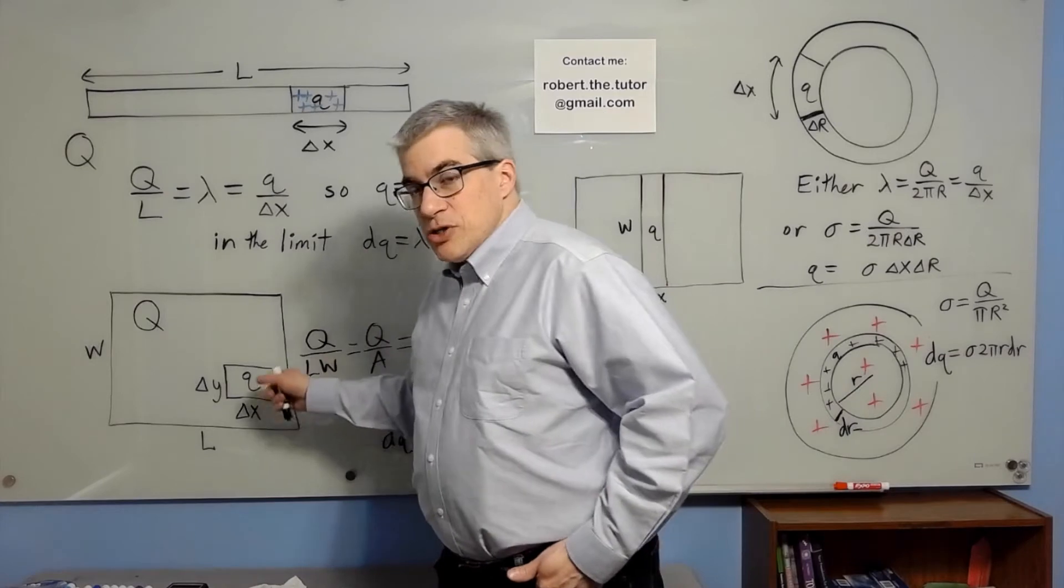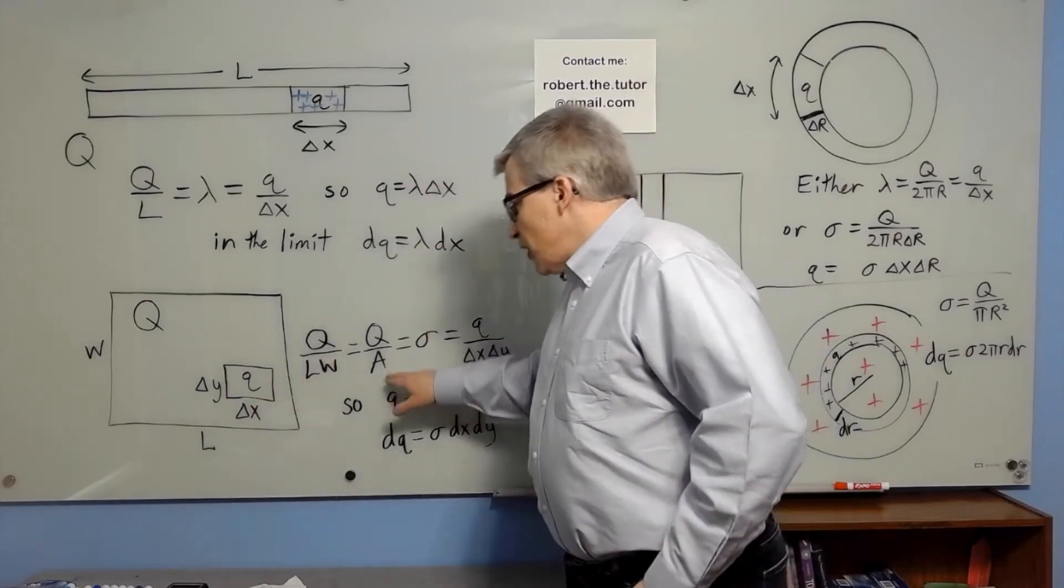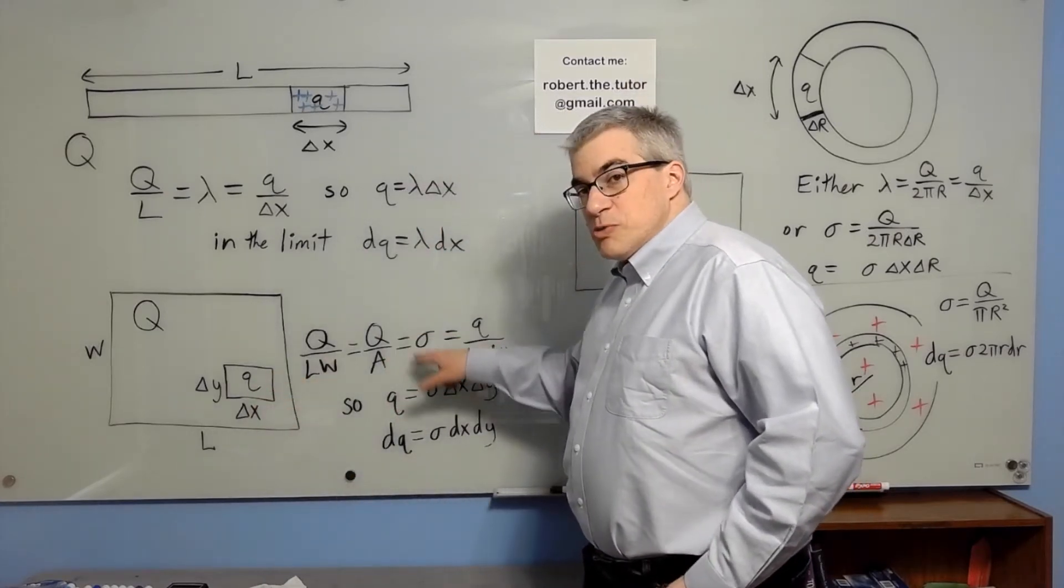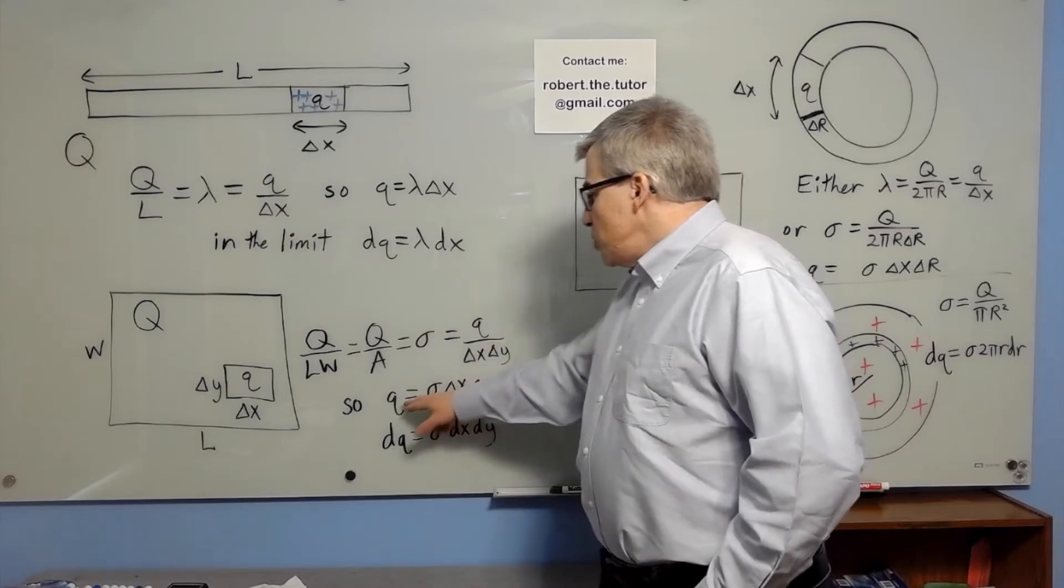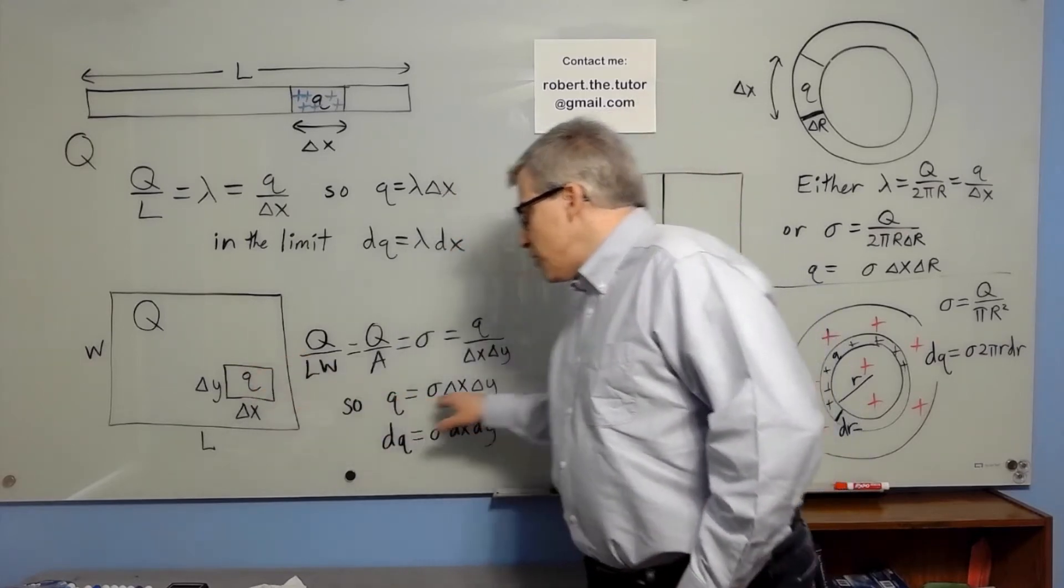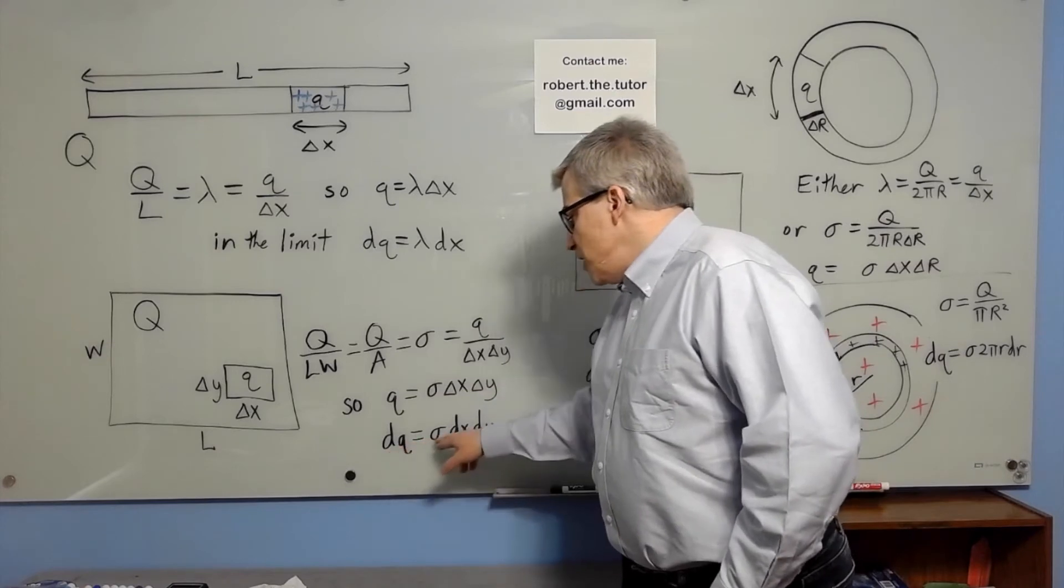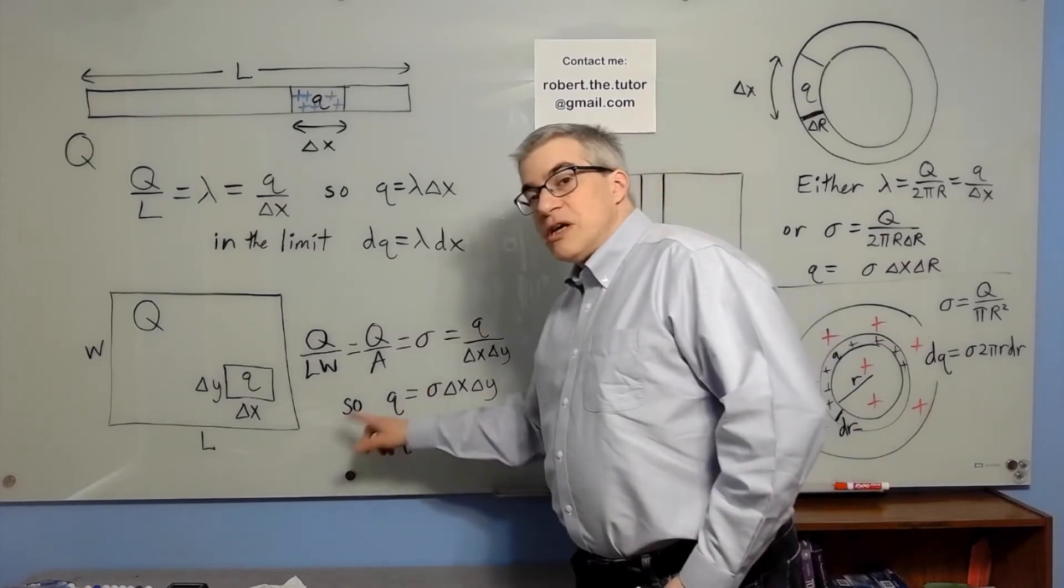If we go to two dimensions, we're talking about Q over area being sigma, coulombs per square meter. So Q would be sigma delta x delta y for a little piece, and dQ would be sigma dx dy. You'd have to do a double integral.